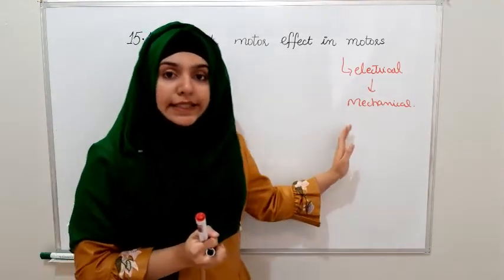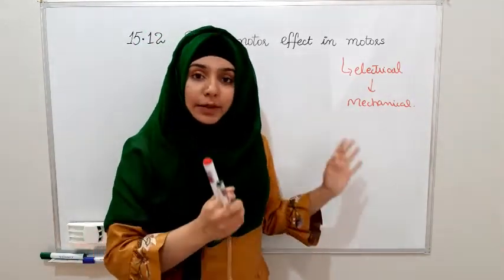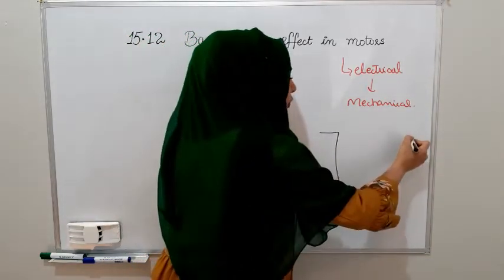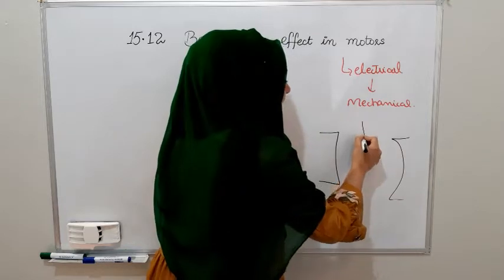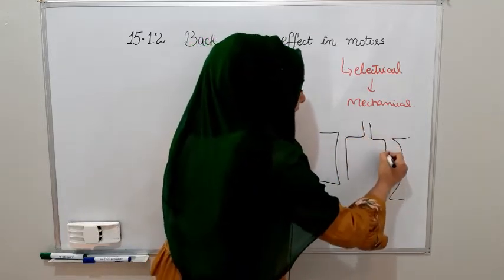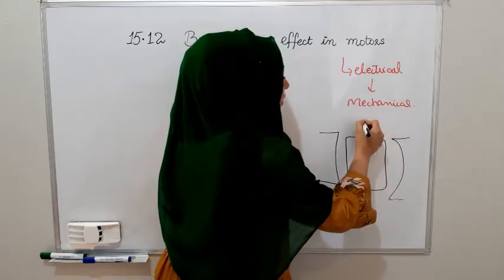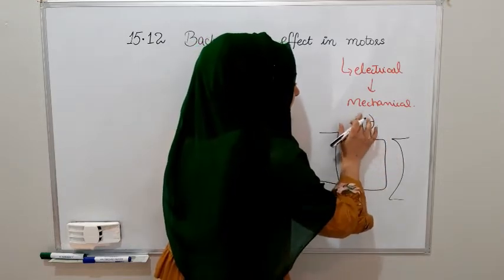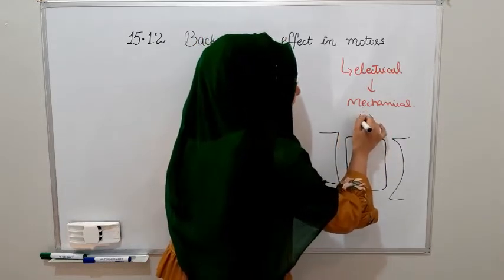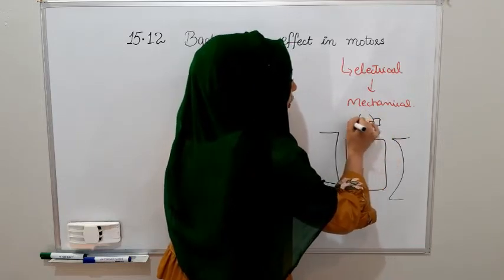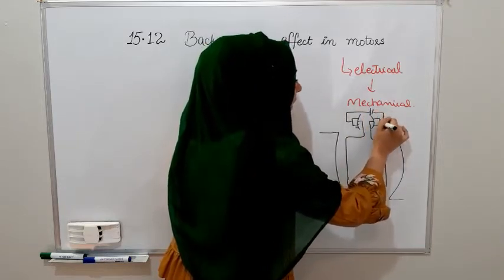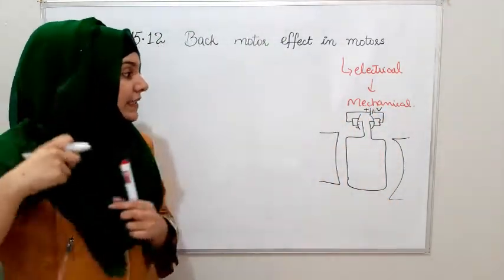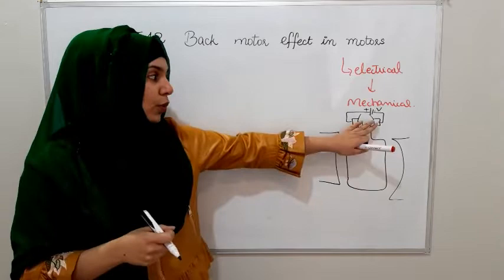Now if you look at this setup, we have magnets here — north pole and south pole. The coil is attached by split rings, and with carbon brushes attached to the battery, where the voltage is provided.